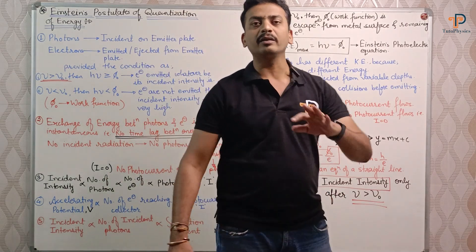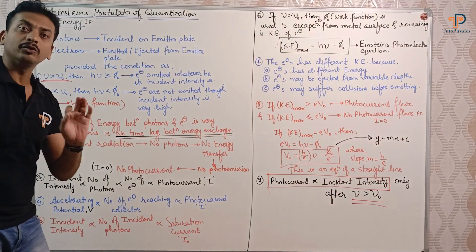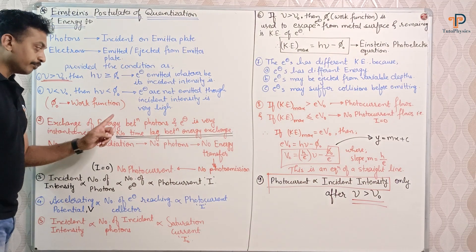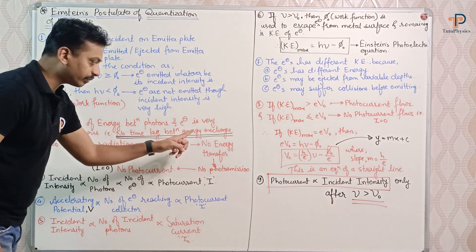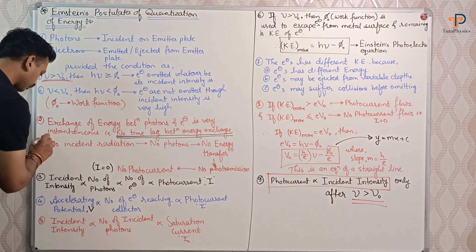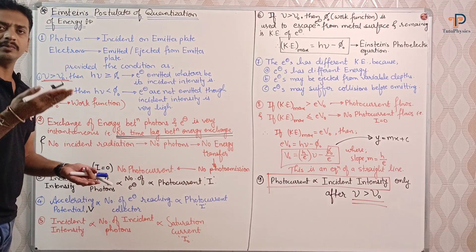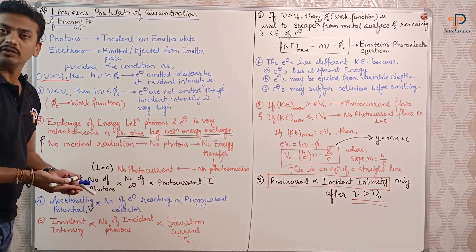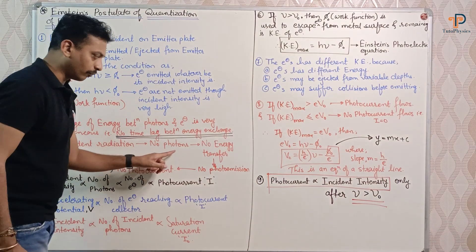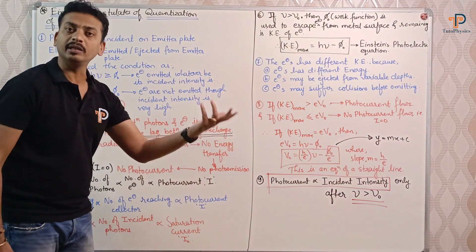The second point we discussed in the photoelectric effect is that there is no time lag between the exchange of energy between photons and electrons. As soon as photons are incident, electrons emit — this process happens in 10⁻⁹ seconds, i.e., nanoseconds. So the exchange of energy between photons and electrons is very instantaneous. If there is no incident radiation, there are no photons, no energy transfer, no photo emission, and hence no current flow.